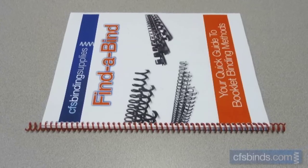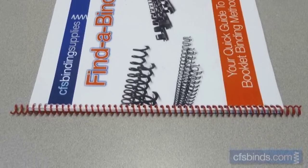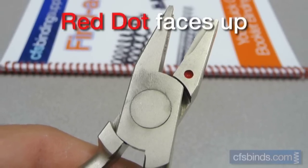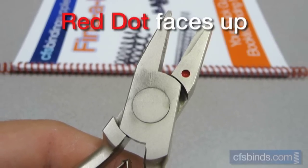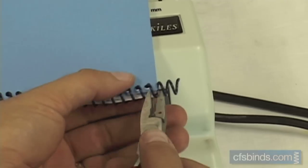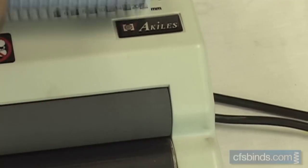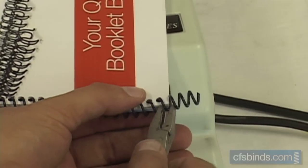You should be leaving about half an inch of excess coil on both ends of the book. Hold the included coil crimping pliers with the red dot facing up towards the ceiling. Clamp around the last loop on the right edge of the book and squeeze to cut with a slight twist to ensure a proper crimp. Flip the book over and repeat for the remaining side.